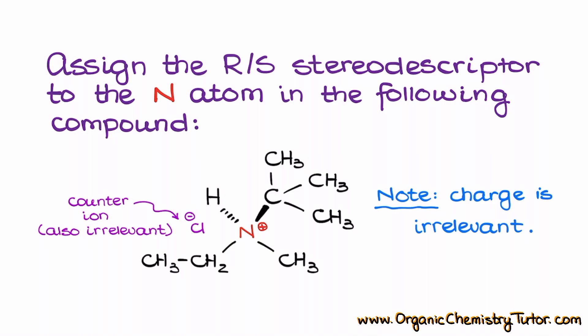So for instance, here is an example. In this example, we want to assign the R and S stereodescriptor to the nitrogen atom in the following molecule. Notice that sometimes molecules can have counter-ions, like we have a chlorine counter-ion in this case. That counter-ion is completely irrelevant because it is not actually directly attached to our nitrogen.